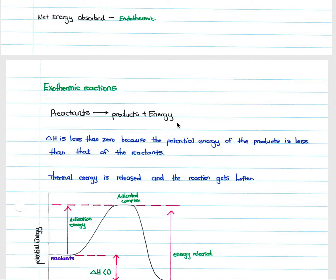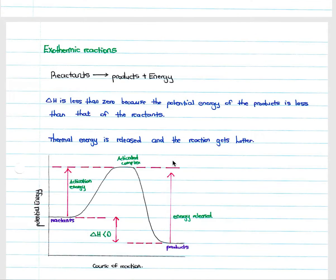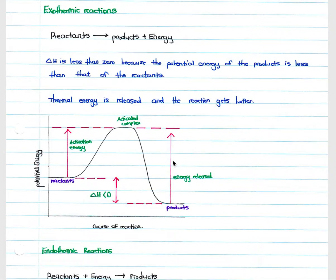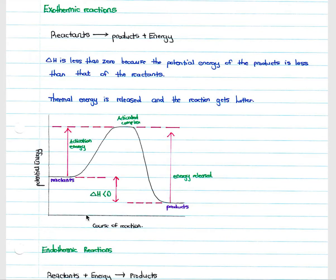In exothermic reactions, reactants form products and energy is released in the form of bond formation. Delta H, our net energy change, is less than zero because the potential energy of the products is less than that of the reactants, thermal energy is released, and the reaction gets hotter. On the potential energy graph, reactants sit at a higher potential energy than products, and delta H equals products minus reactants, which is negative.